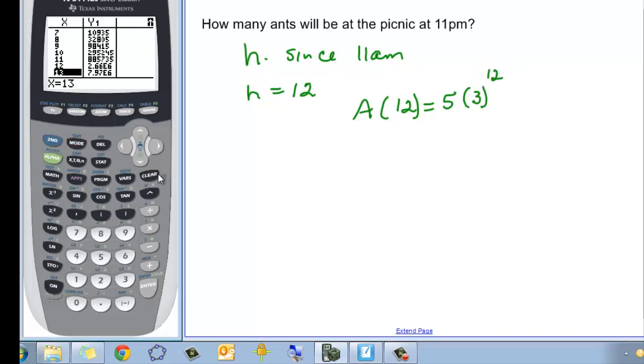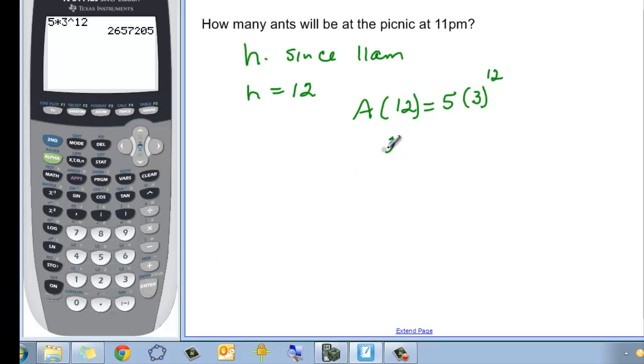So coming back over to our calculator again, we can say five times three caret twelve, and find out that that is a lot of ants. 2,657,205, two million ants plus. That is a lot of ants.